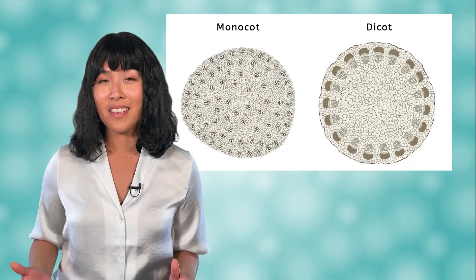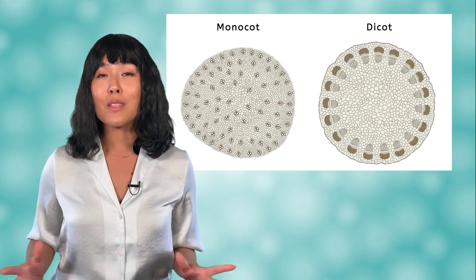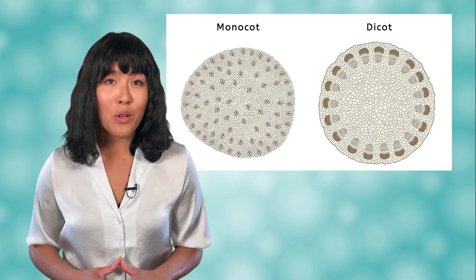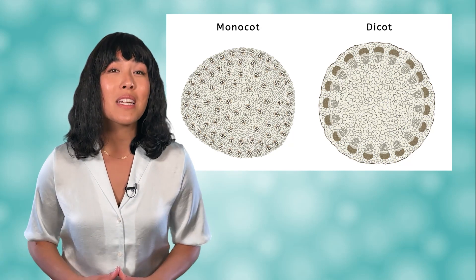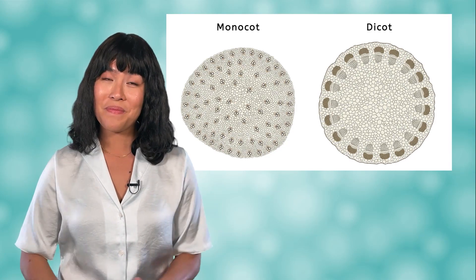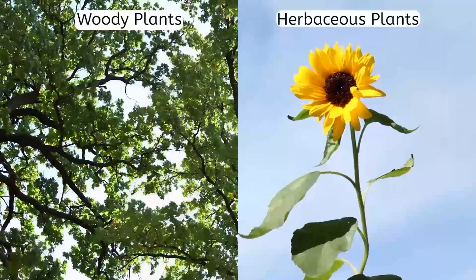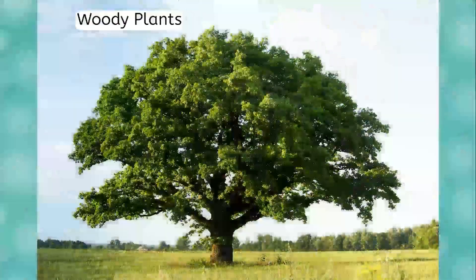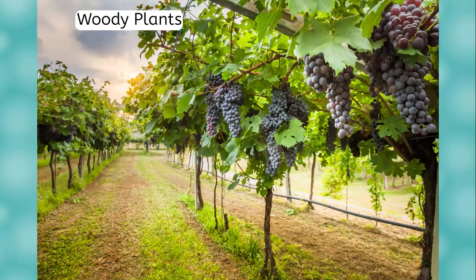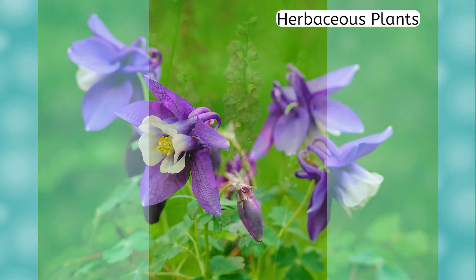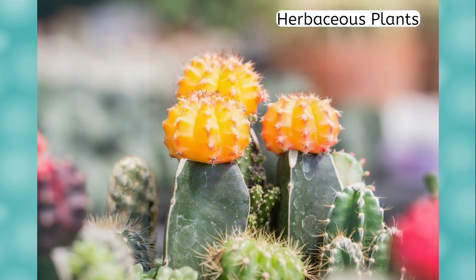There are two classes of angiosperms: monocots and dicots. You'll explore the differences between these two classes more in the lesson PDF, and find that they show differences in the structure of their seeds, leaves, flowers, roots, and stems. Sometimes it is more practical to group plants not by their scientific class, but by other traits that they share. A common way of classifying angiosperms is into woody or herbaceous plants. Woody plants are trees and shrubs that have a rigid trunk made of wood, while herbaceous plants have flexible stems and consist of many varieties of flowers.